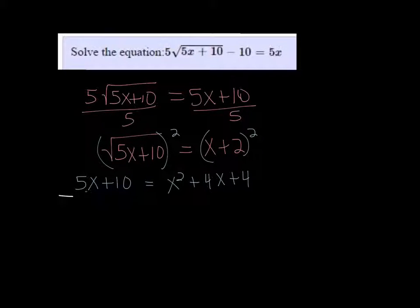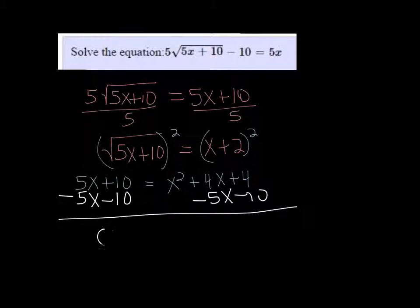So now we're going to bring everything over on the left side over to the right. So I get 0 on the left, and then x squared minus x minus 6.